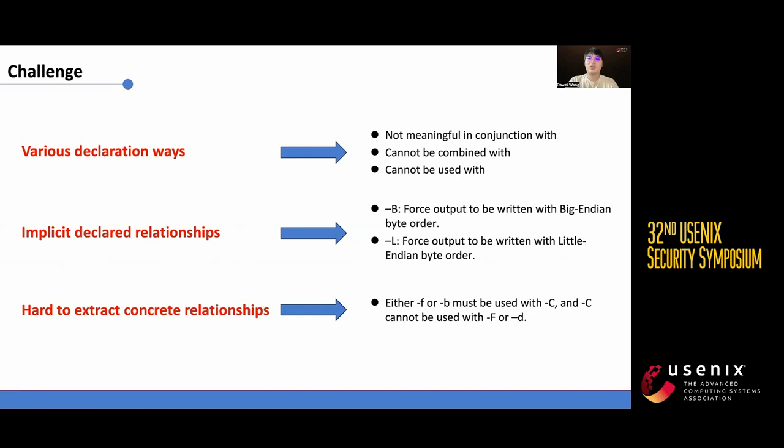Lastly, extracting specific details about relationships like related options and types remains challenging, especially for complete statements. For example, either F or B must be used with C, and C cannot be used with F or D necessitates accurate syntactic analysis to extract the precise relationship information.